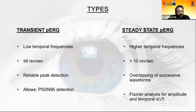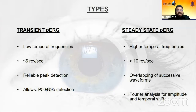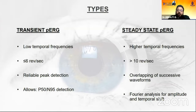The type of ERG we use is a transient pattern ERG, which has low temporal frequencies of less than six pattern reversals per second. It allows reliable peak detection and enables identification of both P50 and N95 waves.